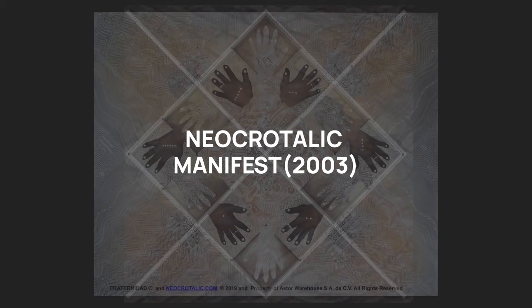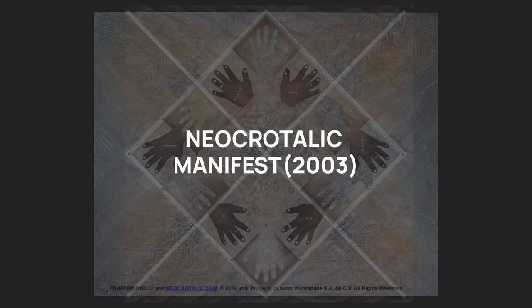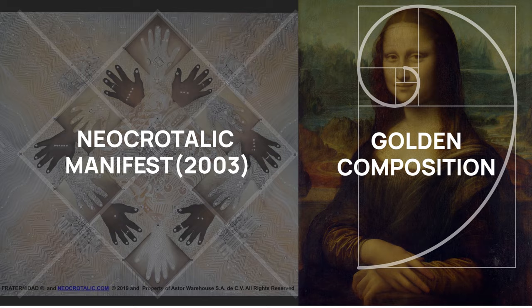It should be used instead of the golden composition, which originated in Western culture. In his manifest, he stated that to rescue the primary elements of Mesoamerican art, seven elemental lines developed by Adolfo Bestmaugid must be used.